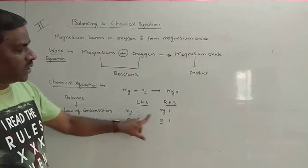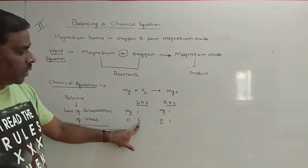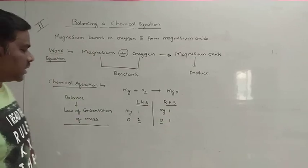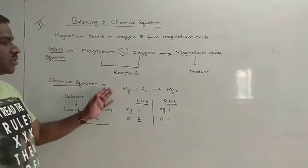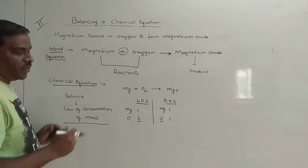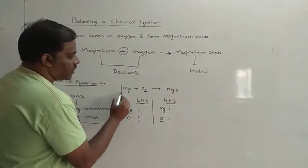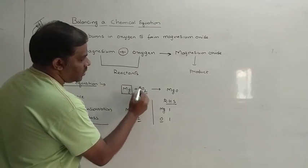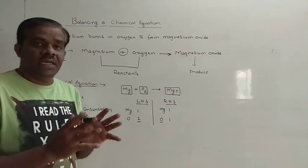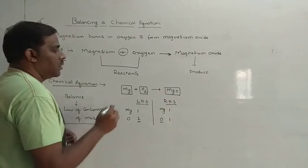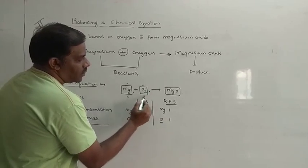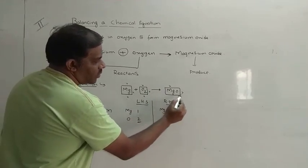Here we have 1 magnesium and 2 oxygens on the left-hand side, whereas there is only 1 oxygen on the right-hand side. So this does not satisfy the equation — this is called an unbalanced chemical equation. To balance this equation, first we draw boxes around the reactants as well as the products. We are not supposed to change anything inside the box, nor write coefficients inside these boxes.